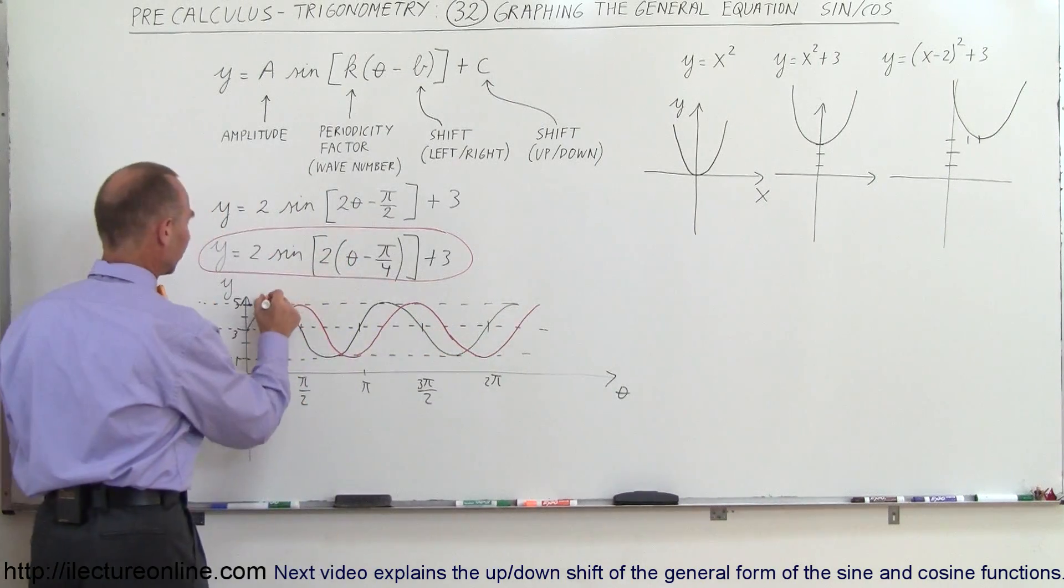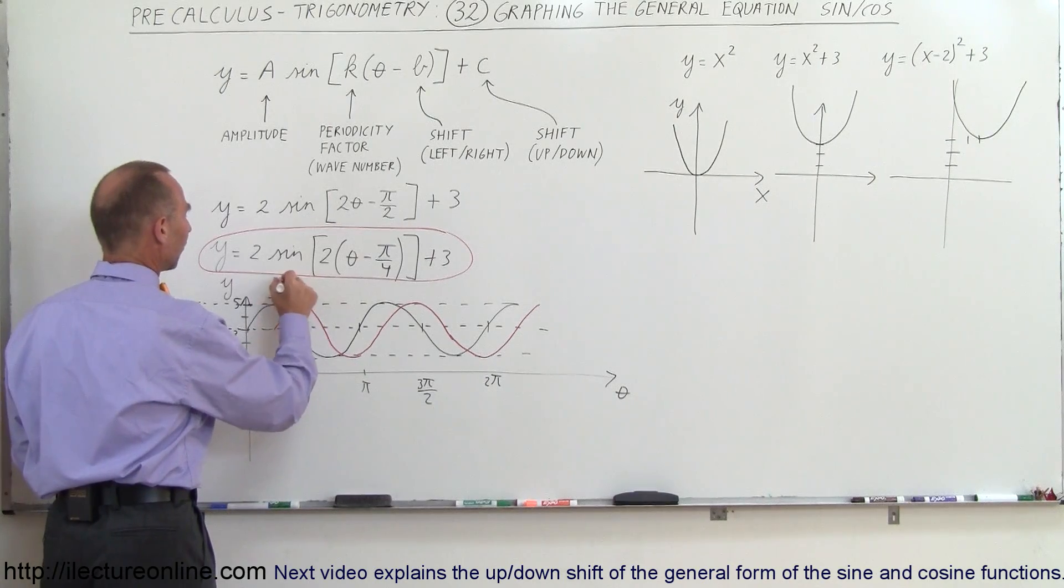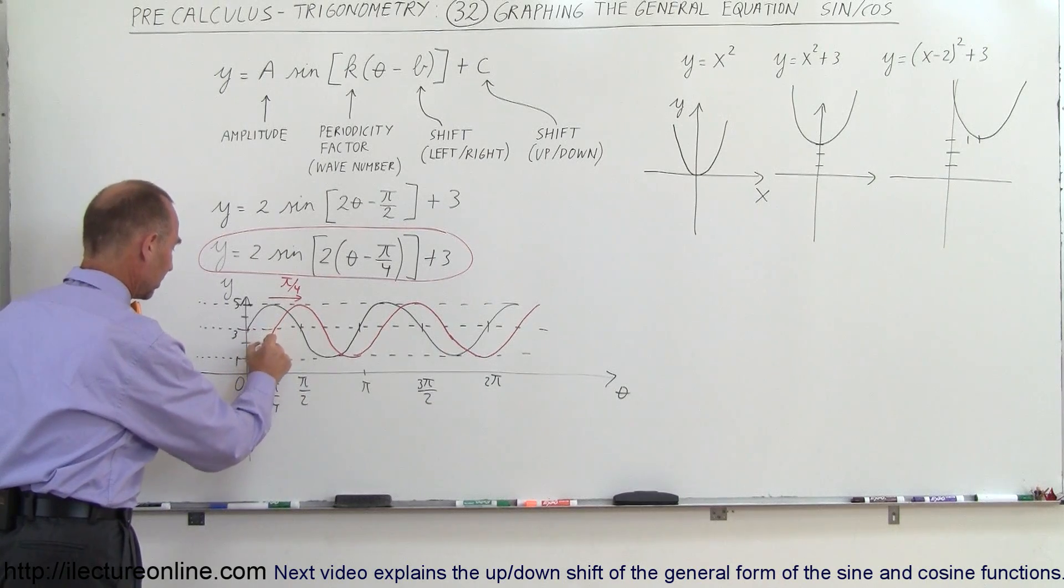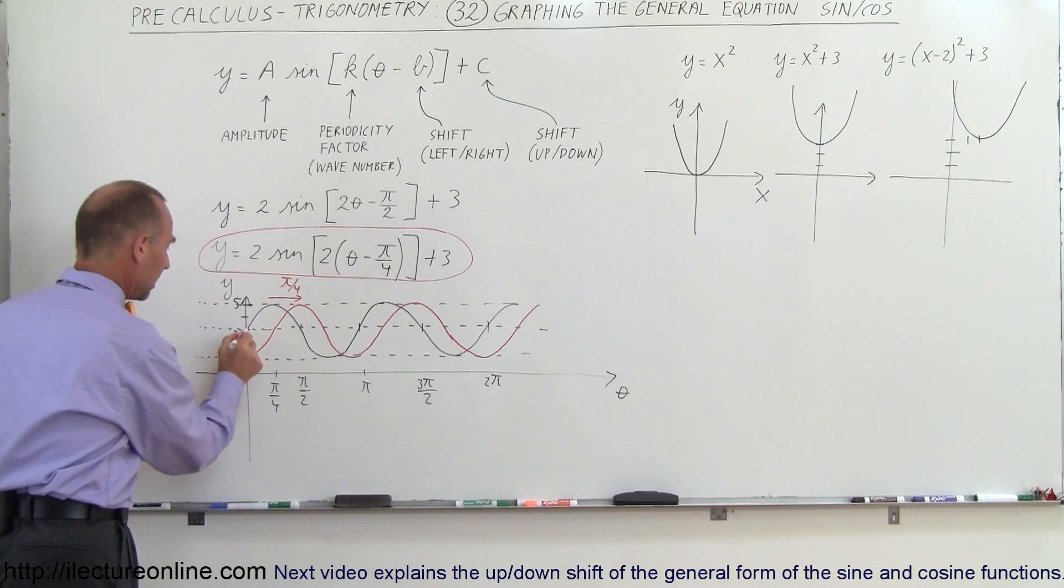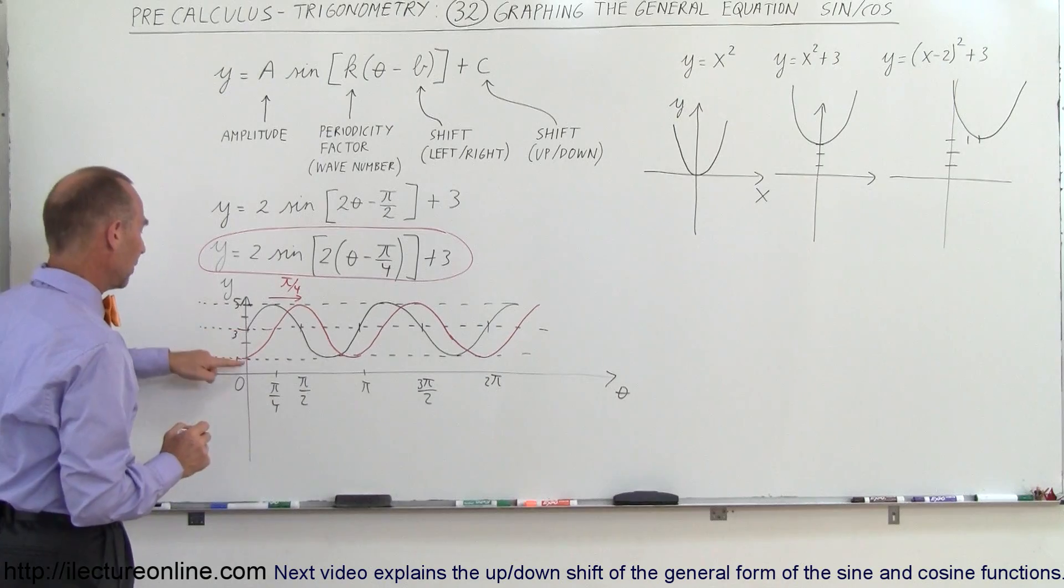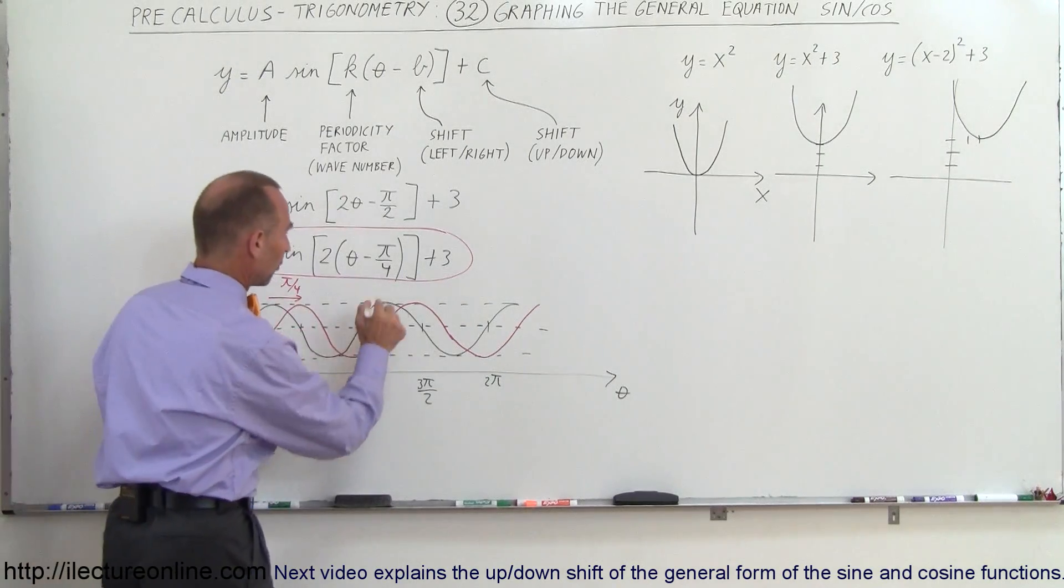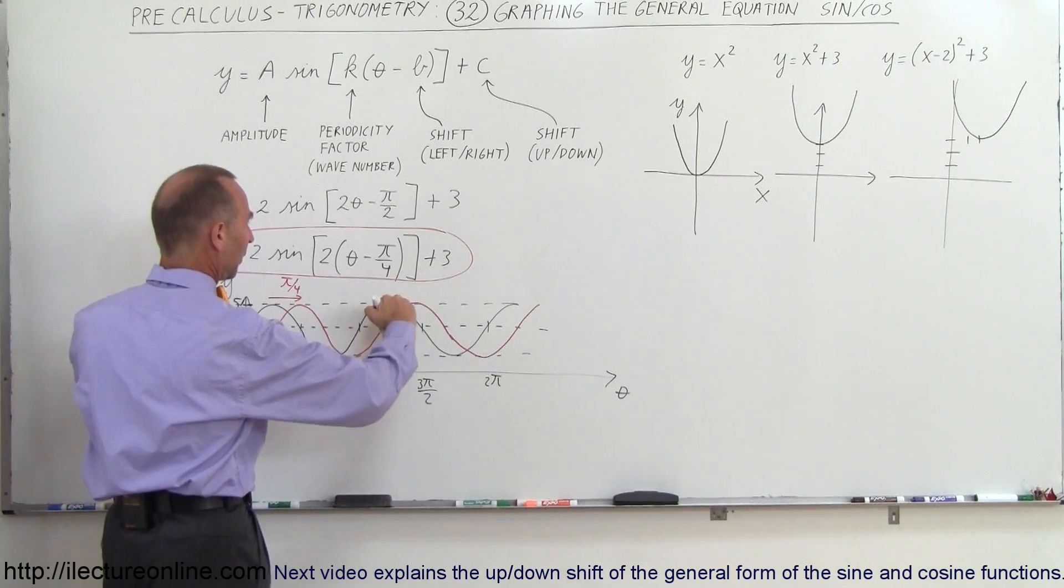Alright, so everything is shifted to the right, a distance of π over 4. And so the red line actually represents, and of course I continue like this, so I'm starting at the point y equals 3, we start at the point y equals 1. And so we have the whole function shifted to the right, π over 4, shifted up, 3.